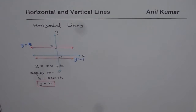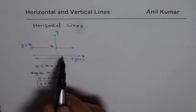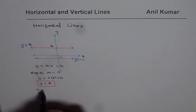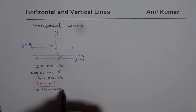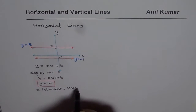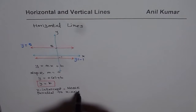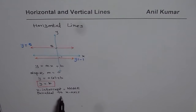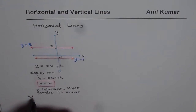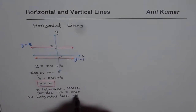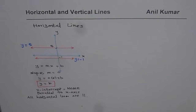So what we notice in all these lines is that they have a y-intercept, and y equals to y-intercept is the equation of the line. Another thing to note is that they do not have an x-intercept — so x-intercept is none. They are parallel to the x-axis, and all these lines are actually parallel to one another. All horizontal lines are parallel. This is the general summary about horizontal lines.